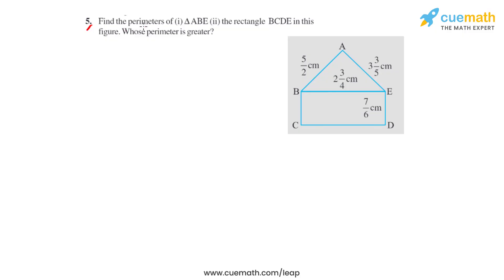Question number 5 says to find the perimeters of triangle ABE and rectangle BCDE in the given figure, and we have to find out whose perimeter is greater. In the given figure we have been given the side lengths of triangle ABE and rectangle BCDE, but a few of the lengths are in the form of mixed fractions, so we'll have to convert them into improper fractions first.